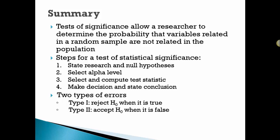In summary, tests of statistical significance allow a researcher to determine the probability that variables are related in a random sample or not related in the population. There's four steps we're going to use, and we talked about two types of errors. This week we went over the chi-square. Next week we'll go over the t statistic.